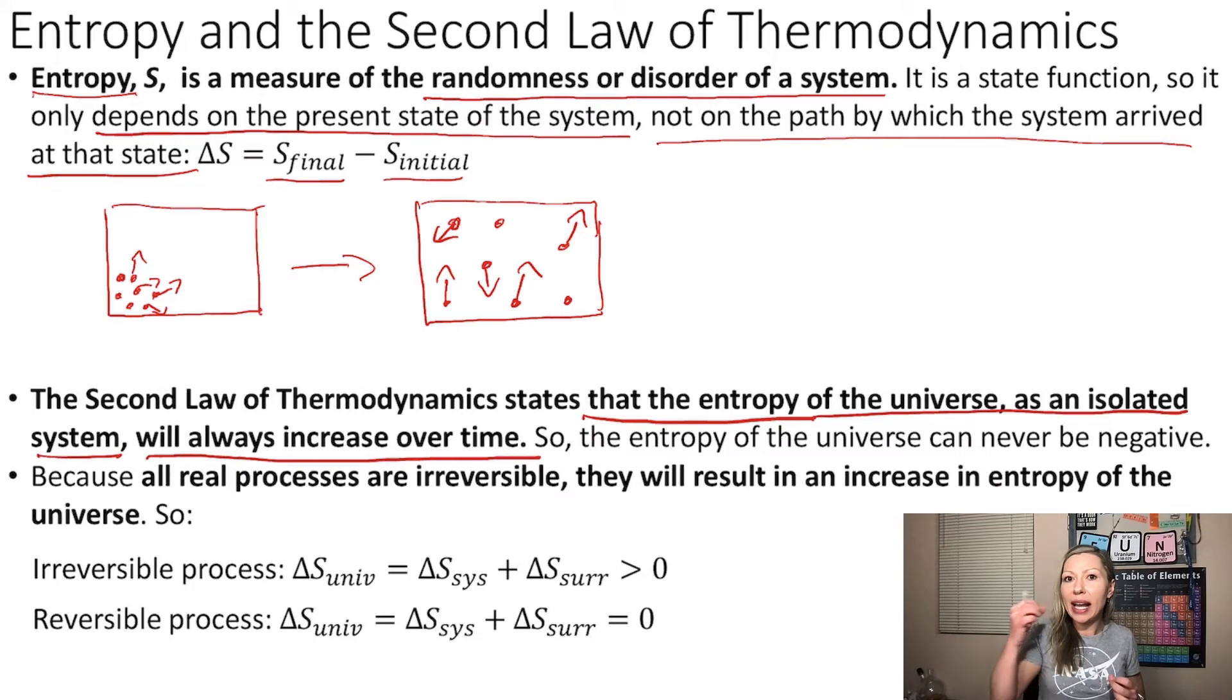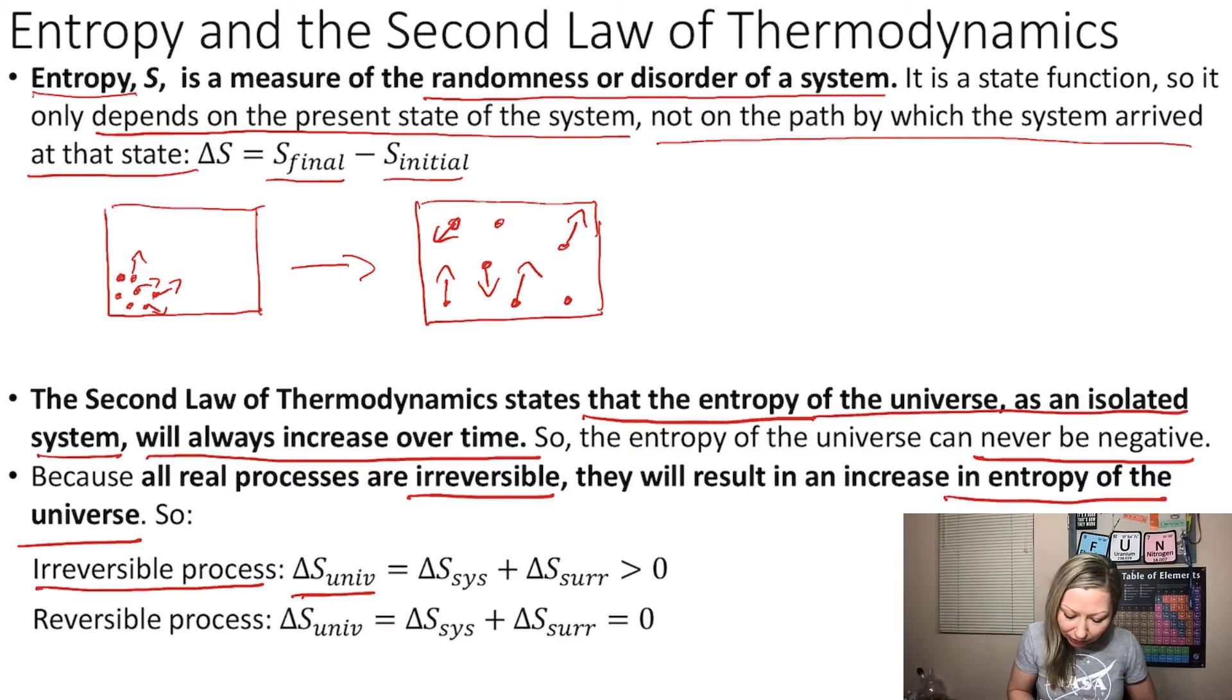So if the entropy of the universe increases over time, that means that the entropy can never be negative in the universe. And because we learn that all real processes are irreversible, they will result in an increase in entropy of the universe. So when we are looking at an irreversible process, the change in entropy for the universe is going to equal the change in entropy of the system plus the change in entropy of the surroundings, which is always going to be larger than zero.